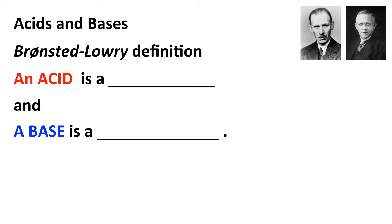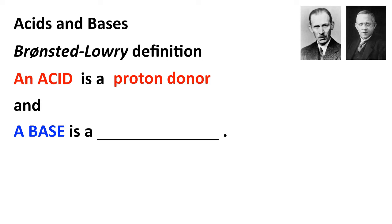A more general way to look at acids and bases is using what's known as the Bronsted-Lowry definition. Johannes Bronsted, a Danish chemist, and Thomas Lowry, an English chemist, in 1923 both independently arrived at the same way of looking at acids and bases. The Bronsted-Lowry definition says that an acid is a substance that donates a proton — we call it a proton donor.